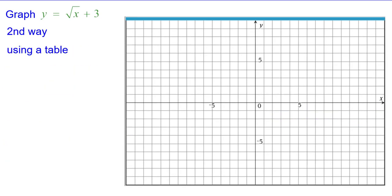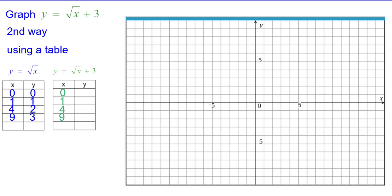A second way would be using a table. Here's our square root of x table that we will use. Again, we'll make the square root of x plus 3 in green.